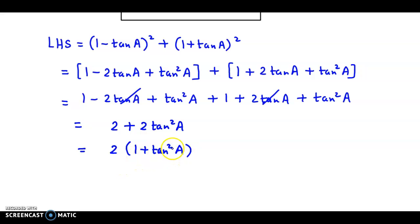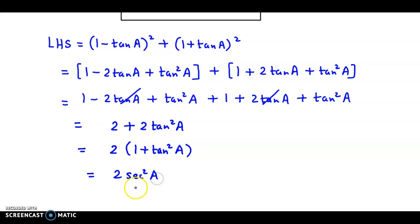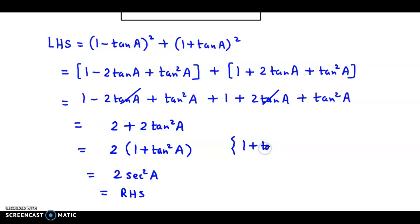Now we know that 1 plus tan square a is equal to sec square a. So 1 plus tan square a becomes sec square a, and we have the right hand side, that is 2 sec square a, which equals the RHS. Please remember: 1 plus tan square theta is equal to sec square theta.